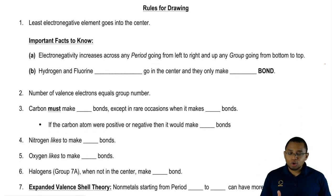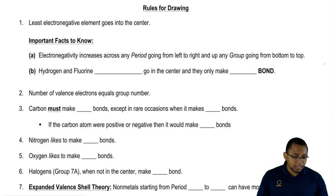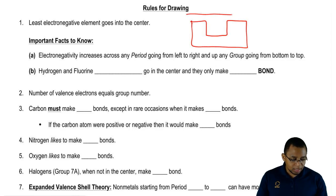Here, if we take a look at the first rule, it says rule number one: least electronegative element goes in the center. Remember, electronegativity, when it comes to our periodic table, increases going from left to right and increases going from the bottom up to the top of any group.